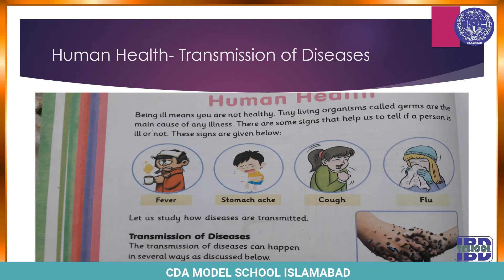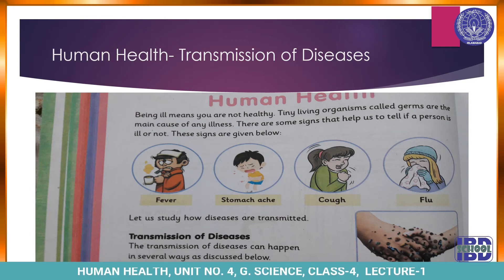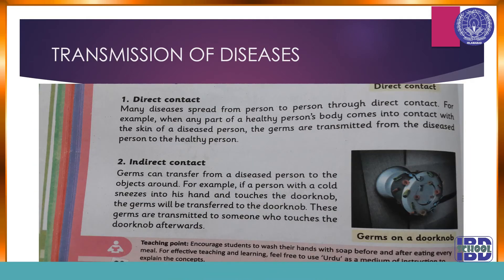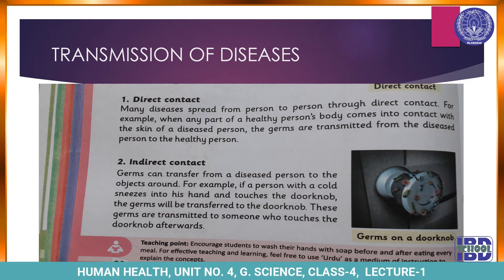Let's study how diseases are transmitted. Transmitted means how disease spreads from one person to another person. The transmission of diseases can happen in several ways as discussed below. Let's see the next slide.